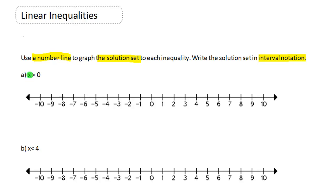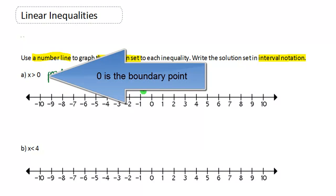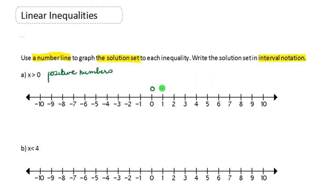In this first example we want to graph the inequality x is greater than zero. x is greater than zero means that x is a positive number, so this inequality is just another way to represent the positive numbers. To graph the solution set, look at zero — zero is called the boundary point. We put an open dot at zero and then draw an arrow to the right to include every positive number just bigger than zero.